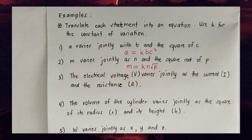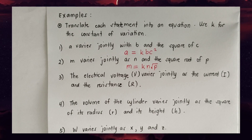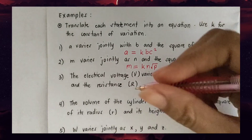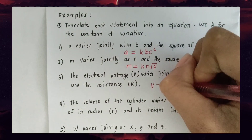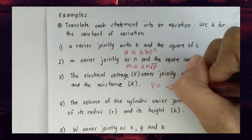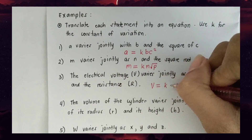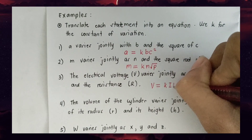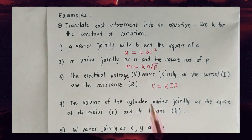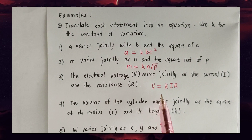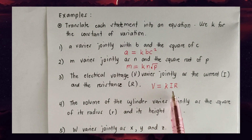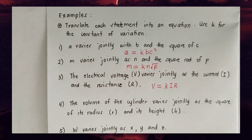Number three: 'The electrical voltage V varies jointly as the current I and the resistance R.' The equation is V = kIR — voltage varies jointly as your current and resistance.